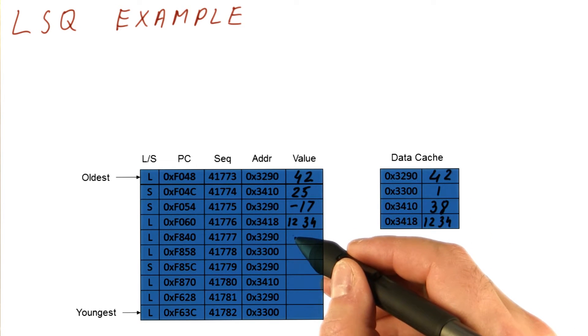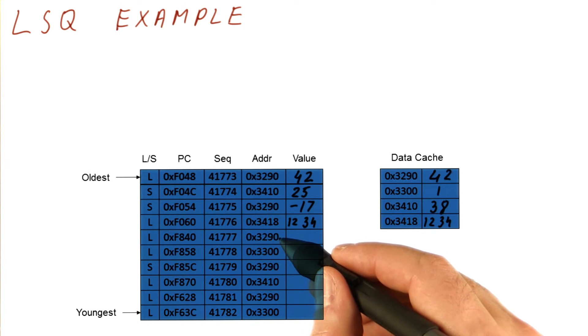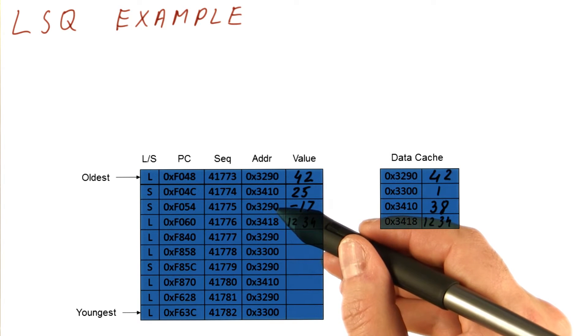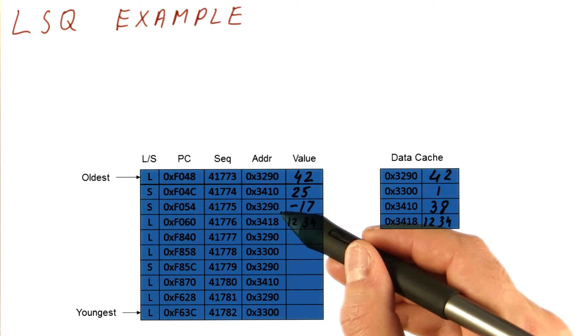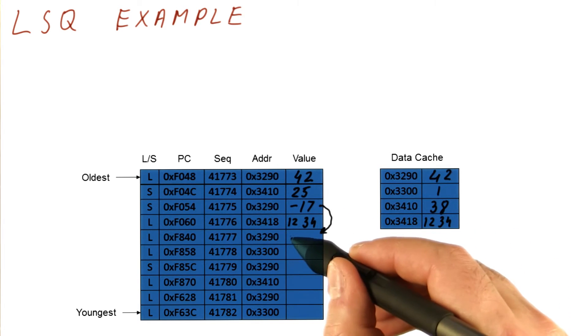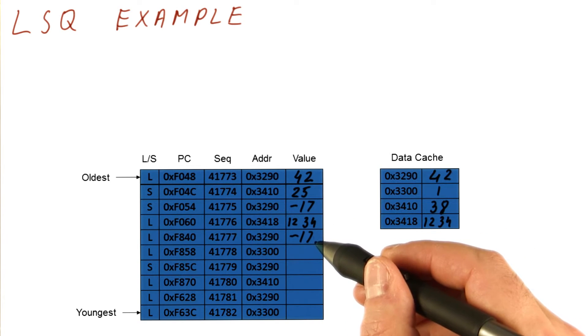Next, this load tries to load the value. It has the address of 3290. It's going to search upward for the latest store that still precedes it, that matches the address, and it finds one. This store is having the address of 3290. So instead of going to the cache, we are directly going to copy just the value of minus 17 here. So now we actually had a load that never really accesses the cache. It just gets the value from the store.